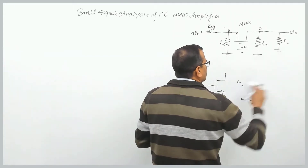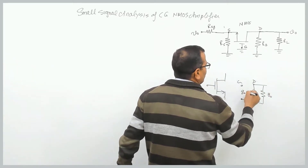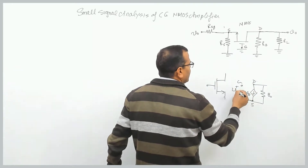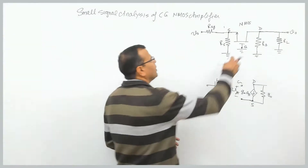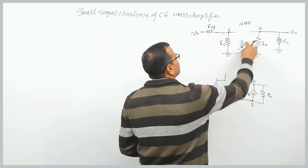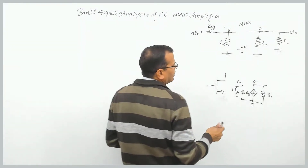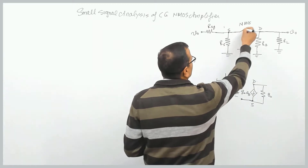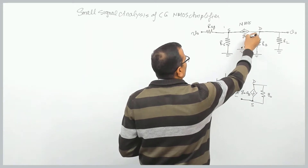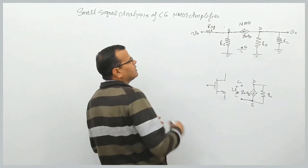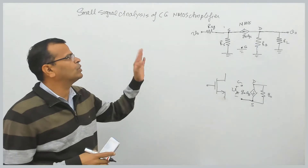There is a resistance R0 between the drain and source. The current source has value GM times VGS, where VGS is the voltage between gate and source. The gate terminal is left open-circuited. There is a current source between drain and source with value GM·VGS, and a resistance R0 connected between source and drain.